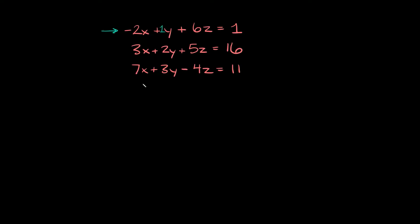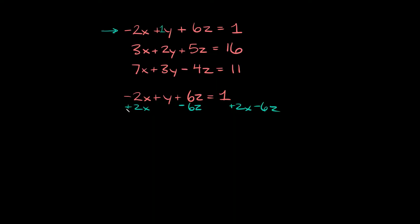So let's bring that equation down: we have negative 2x plus y plus 6z is equal to 1, and I want to solve for y. To isolate y, let's get rid of the negative 2x and the 6z. We're going to add 2x to both sides and subtract 6z from both sides. Those cancel out, and we're left with y is equal to 1 plus 2x minus 6z.